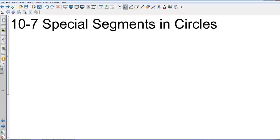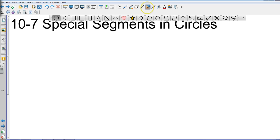Okay, geometry chapter 10 section 7, special segments in circles. We're going to be looking at segment length. Last section we looked at angles, so we'll just change it up a little bit.